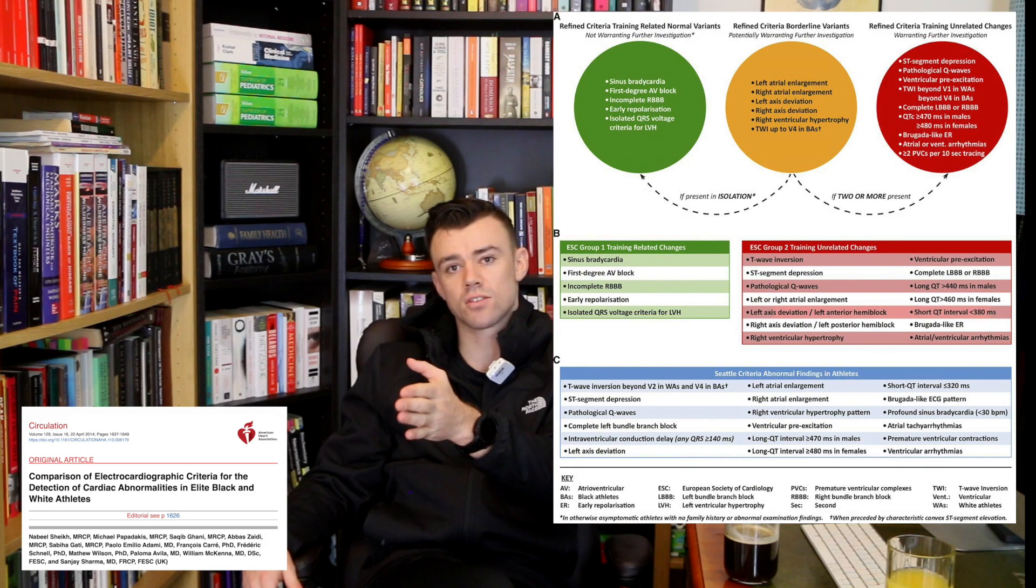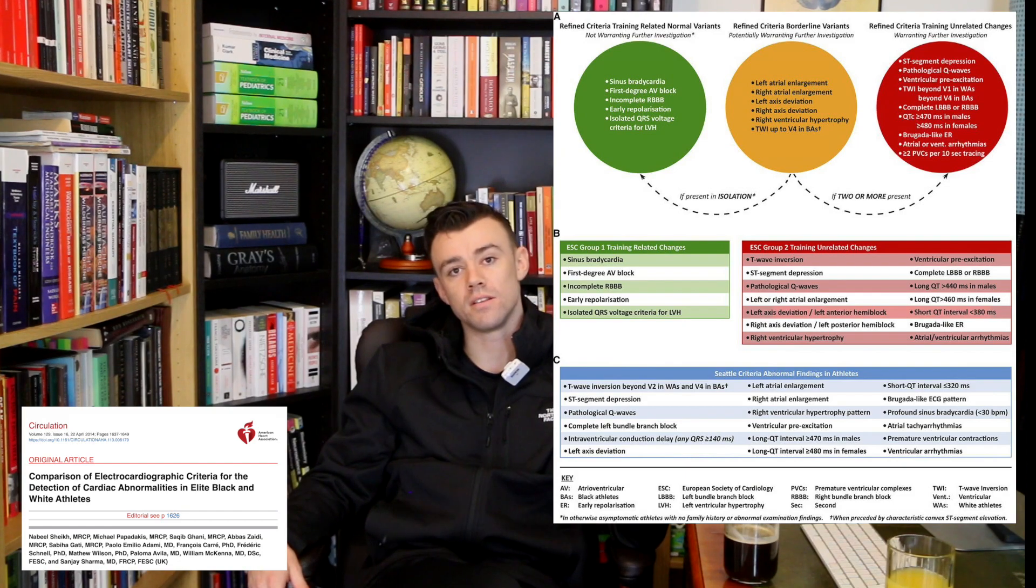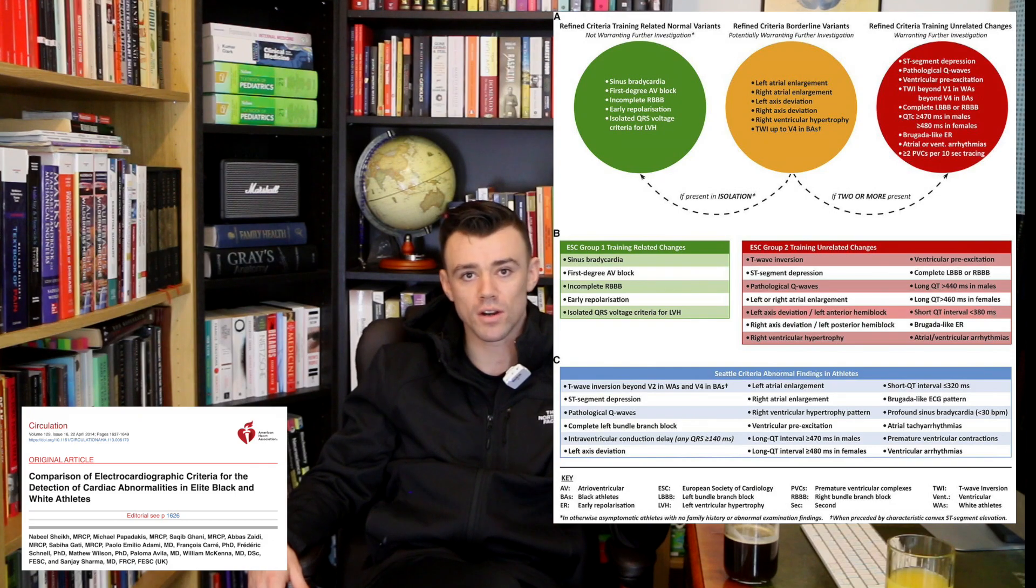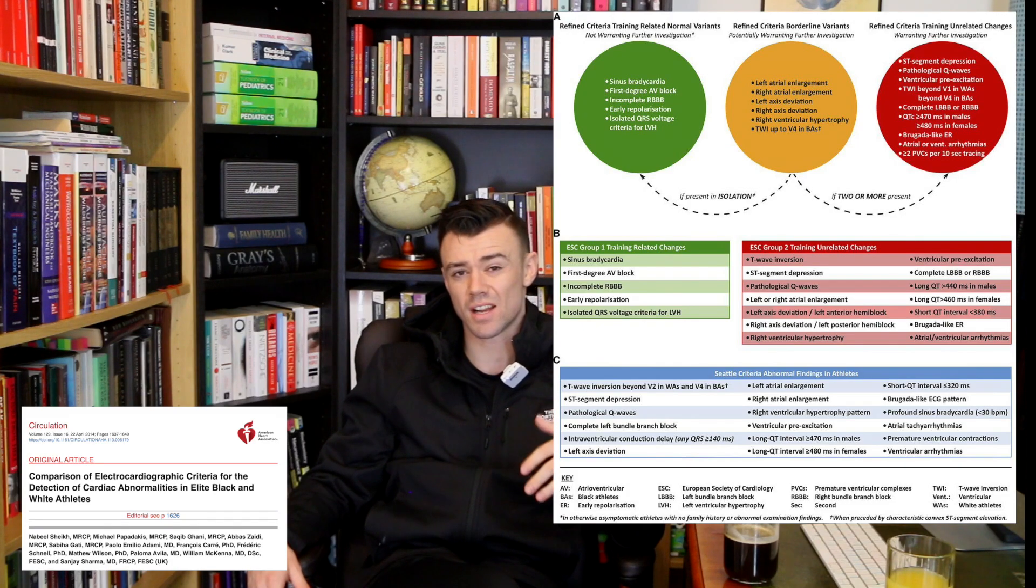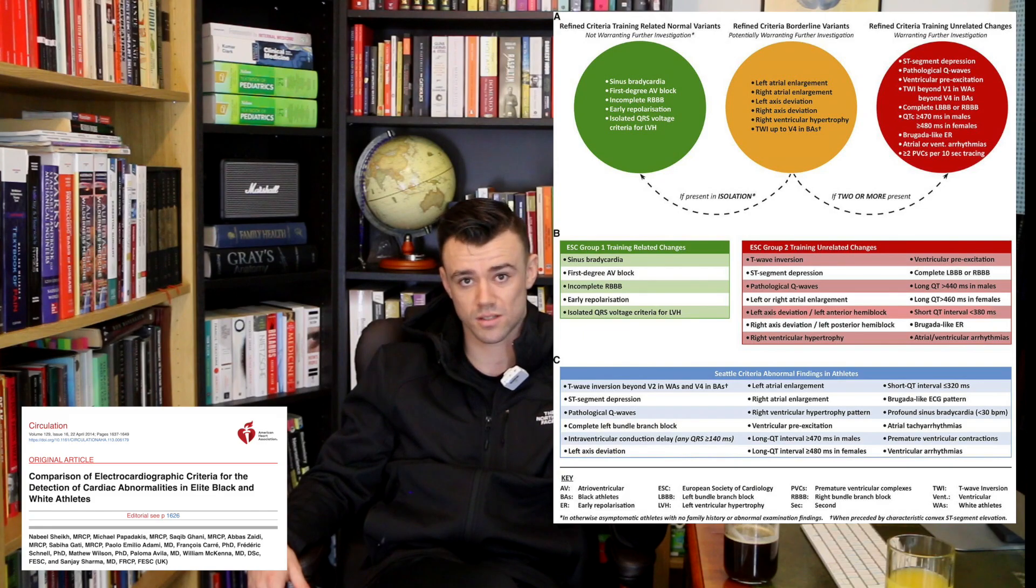When you do an ECG in an athlete, you can find findings like an increase in a PR interval. This is basically something referred to as first-degree heart block. That sounds very serious, but it's actually something fairly prevalent in athletes and isn't of any consequence. With that said, one of the things that has made the headlines in recent years has been findings in athletes in their arteries of coronary artery calcification.